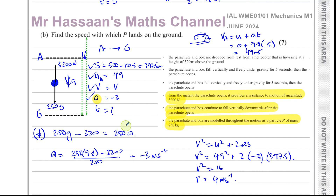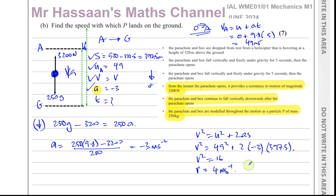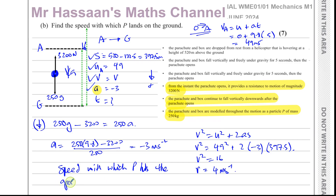This gives V² = 16, so V = 4 meters per second. Since we took down as positive, this means 4 meters per second going downward. The speed with which P hits the ground is 4 meters per second.